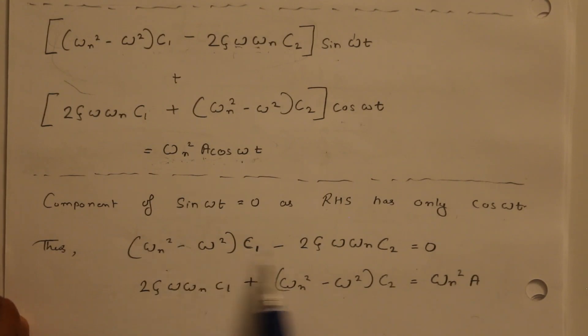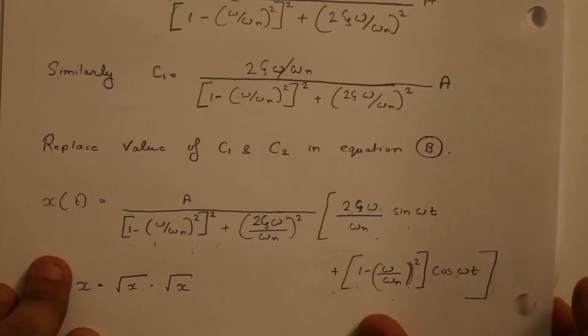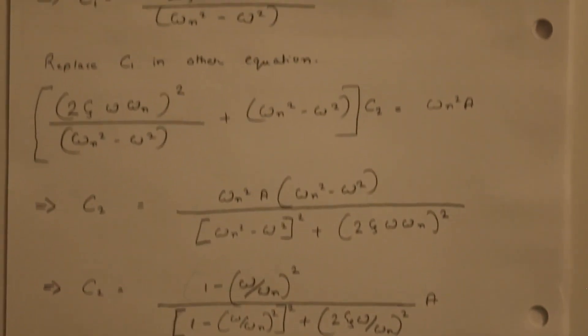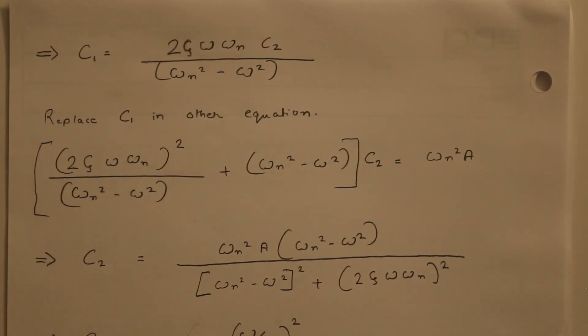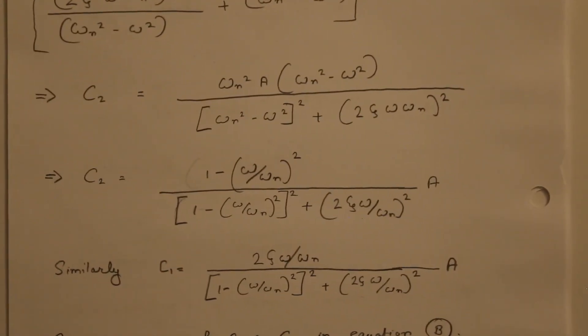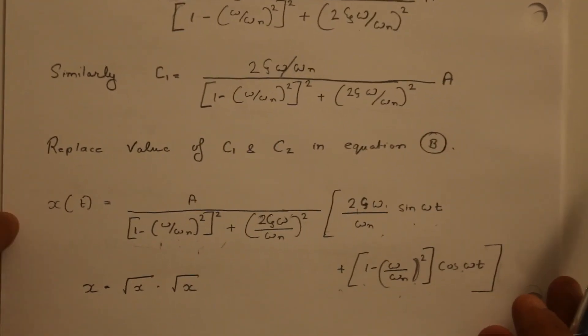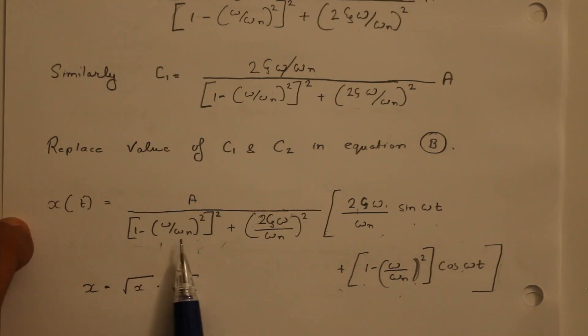If you do that you get something like this as we discussed and you can use the method of substitution or Cramer's rule to figure out the value of c₁ and c₂. I used method of substitution over here because more people can understand it. So c₁ is equal to 2ζω ωn c₂ over ωn² minus ω². So I can figure out the value of c₂ and c₁ basic high school maths. I'm not going into details for that but this function is more important for us. What I did is I replaced the value of c₁ and c₂ in the equation x(t) is equal to c₁ sin ωt plus c₂ cos ωt.